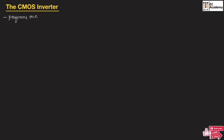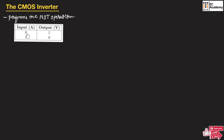A CMOS inverter performs the basic NOT operation, which means when the input is 0, the output will be 1, and when the input is 1, the output will be 0. The output will be the complement of the input.